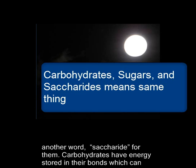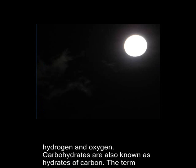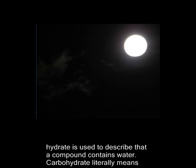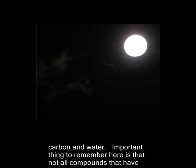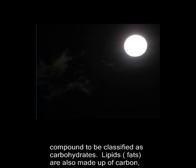Carbohydrates have energy stored in their bonds, which can be released when these bonds are broken. Carbohydrates are made up of three elements: carbon, hydrogen, and oxygen. Carbohydrates are also known as hydrates of carbon. The term hydrate is used to describe that a compound contains water. Carbohydrates literally means carbon and water. Importantly, not all compounds that have carbon, hydrogen, and oxygen are carbohydrates — it depends upon the chemical structure of the compound.